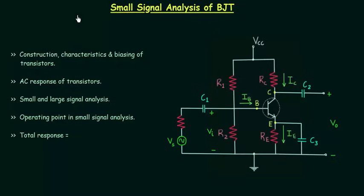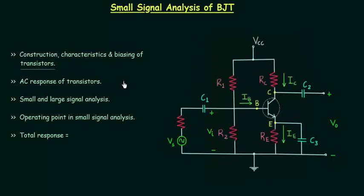From this lecture we will start a new chapter on small signal analysis of BJT. We have already completed the construction, characteristics, and biasing parts of transistors. In this chapter we will examine the AC response of transistors, and for this purpose I will introduce different frequently used transistor models.